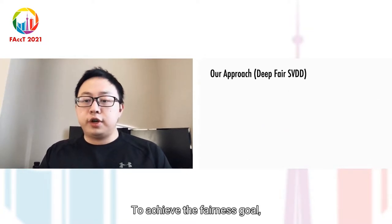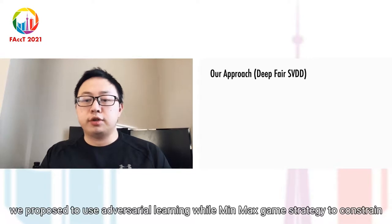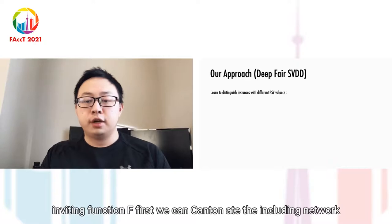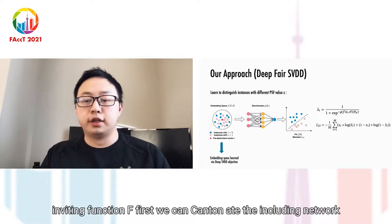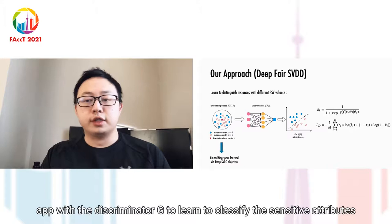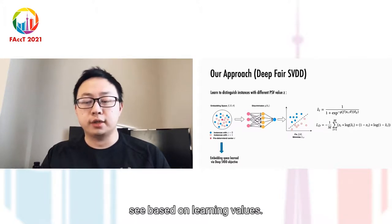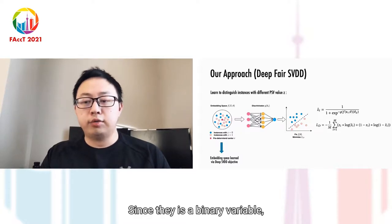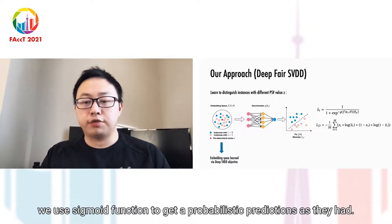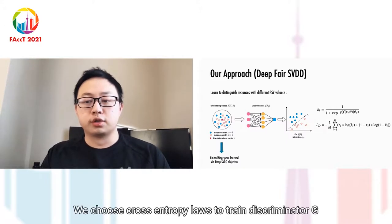To achieve the fairness goal, we propose to use adversarial learning with a min-max game strategy to constrain the embedding function F. First, we concatenate the encoding network F with discriminator G to learn to classify the sensitive attribute Z based on learned embeddings. Since Z is a binary variable, we use sigmoid function to get a probabilistic prediction as Z hat. We choose cross-entropy loss to train discriminator G.